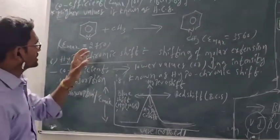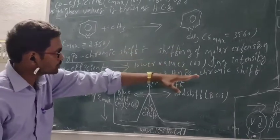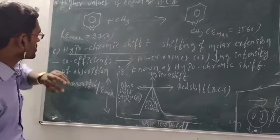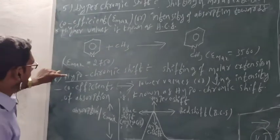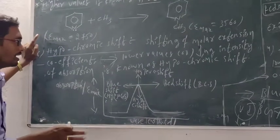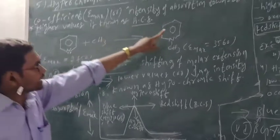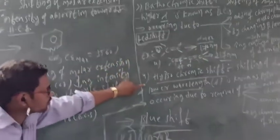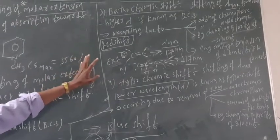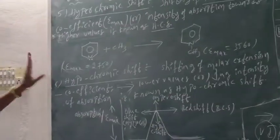To summarize the four spectral shifts: bathochromic shift and hypsochromic shift are related to wavelength — lambda max either increases (red shift) or decreases (blue shift). Hyperchromic shift and hypochromic shift are related to absorption intensity — the molar extinction coefficient either increases or decreases.